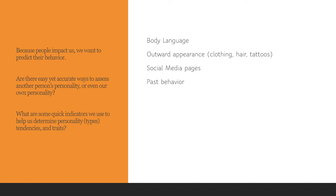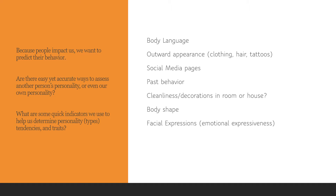Do you look at past behavior? Does that allow us to predict future behavior? If you've been to their home, do you look at how clean it is or the decorations they have? Do you ever look at their body shape? That sounds strange, but we'll be looking at an older theory that involved actually looking at someone's body shape. Do you look at someone's facial expressions or how emotionally expressive they are? What information do you use and why — does it lead you to the right conclusions or is it full of bias?